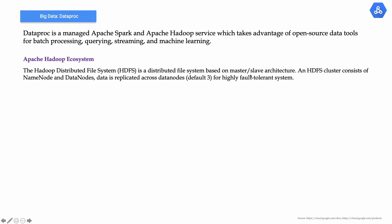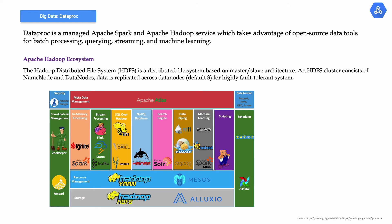Now, what is Apache Hadoop? If you come from the big data world, you'll probably understand this. Apache Hadoop is a distributed file system based on master and slave architecture. An HDFS cluster basically consists of name nodes and data nodes, and data is replicated across data nodes - by default three - for a highly fault-tolerant system. The concept of Hadoop came in terms of separating the compute and storage, so compute happens separately and storage happens separately.